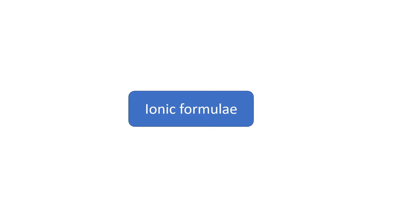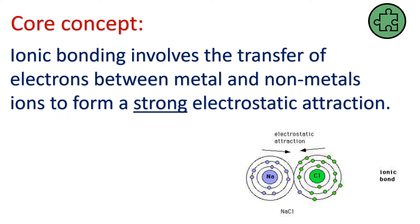Hello and welcome to our lesson on ionic formulae. In our previous lesson we looked at ionic bonding. Ionic bonding involves a transfer of electrons between positive metals and negative non-metals to form strong electrostatic attraction, and it's that strong electrostatic attraction that holds these ionic compounds together.